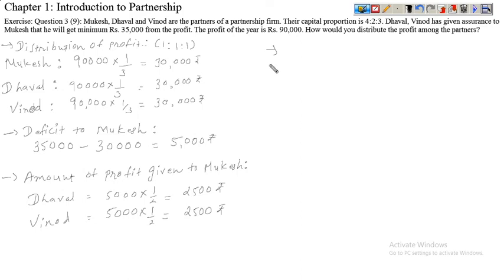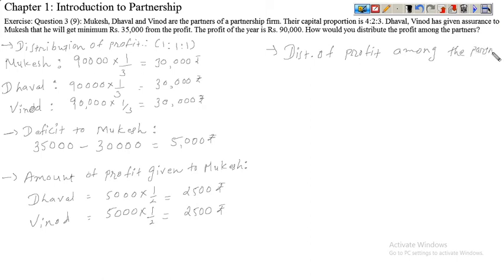So this is the distribution of profit among the partners. We have three partners: Mukesh, Dhaval, and Vinod.